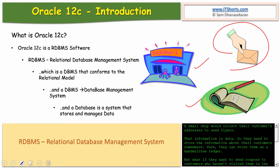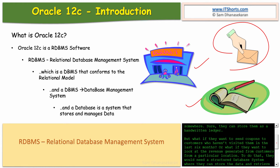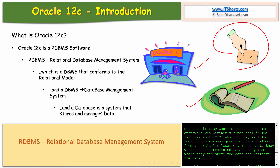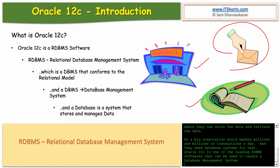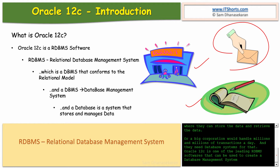They can store customer information as a handwritten ledger, but what if they want to send coupons to customers who haven't visited in a while, or look at revenue generated from customers from a particular location? To do that, they would need a structured database system where they can store and retrieve data. A big corporation handles millions of transactions a day and needs database systems for that. Oracle 12c is one of the leading RDBMS softwares that can be used to create a database management system.